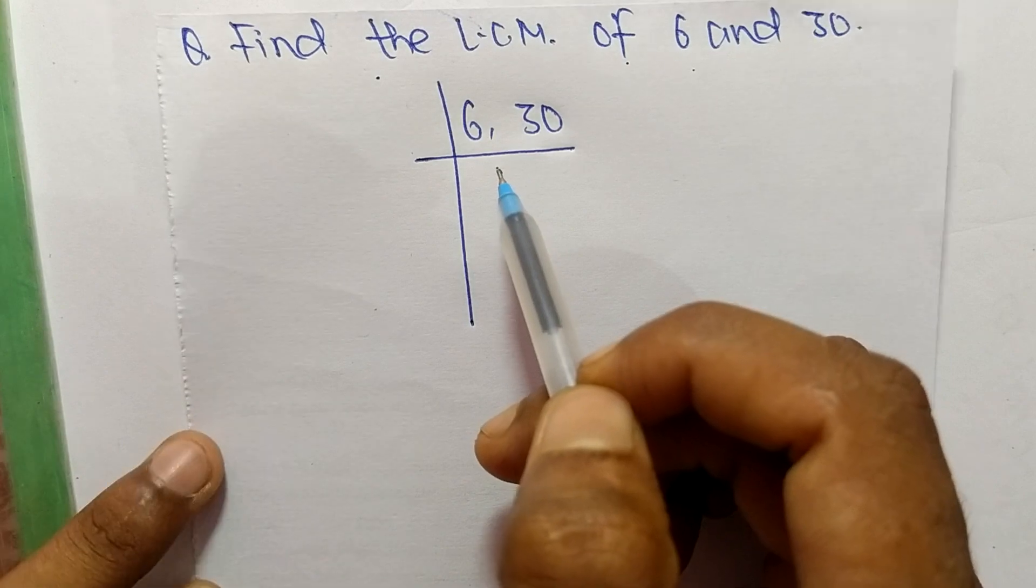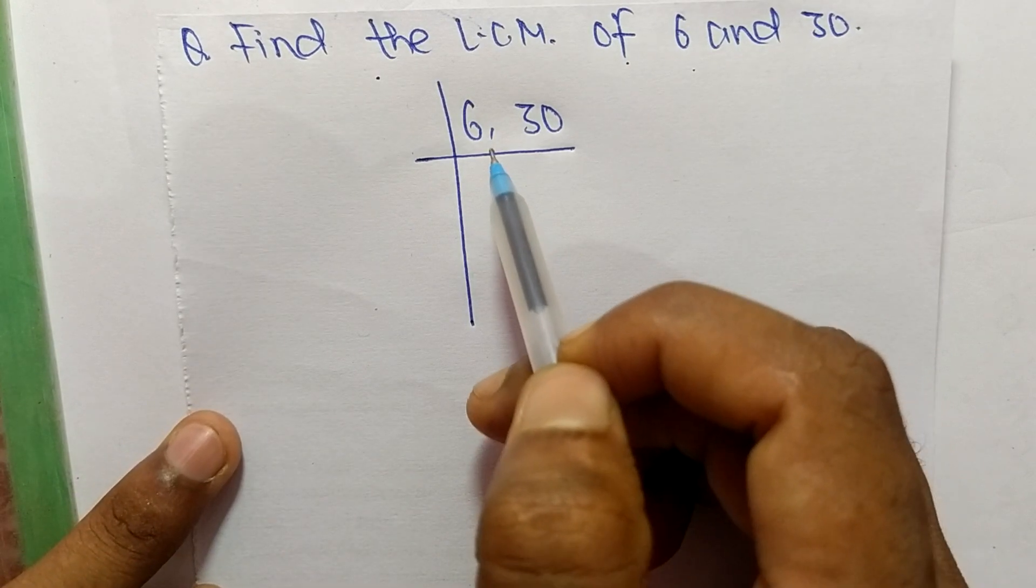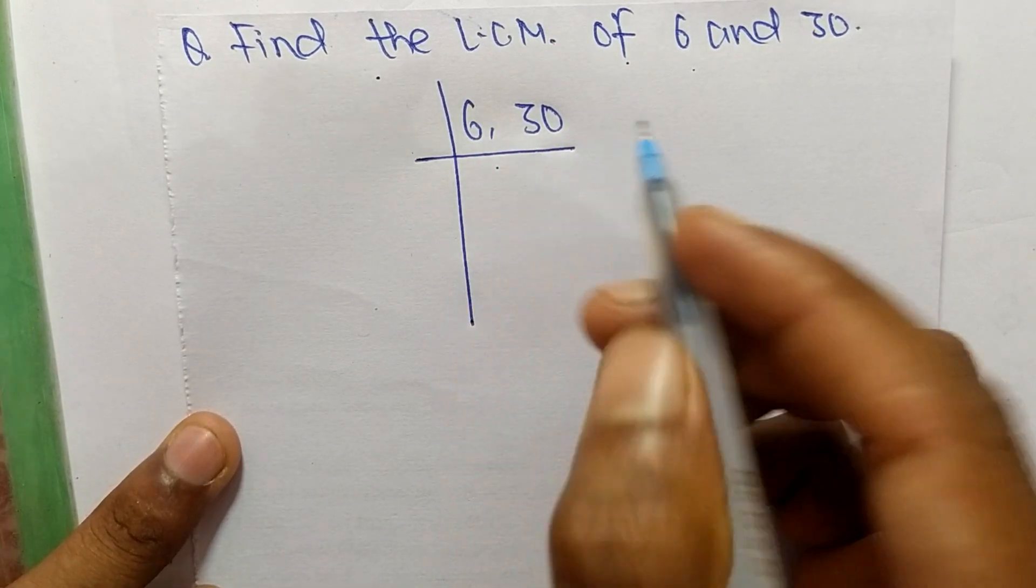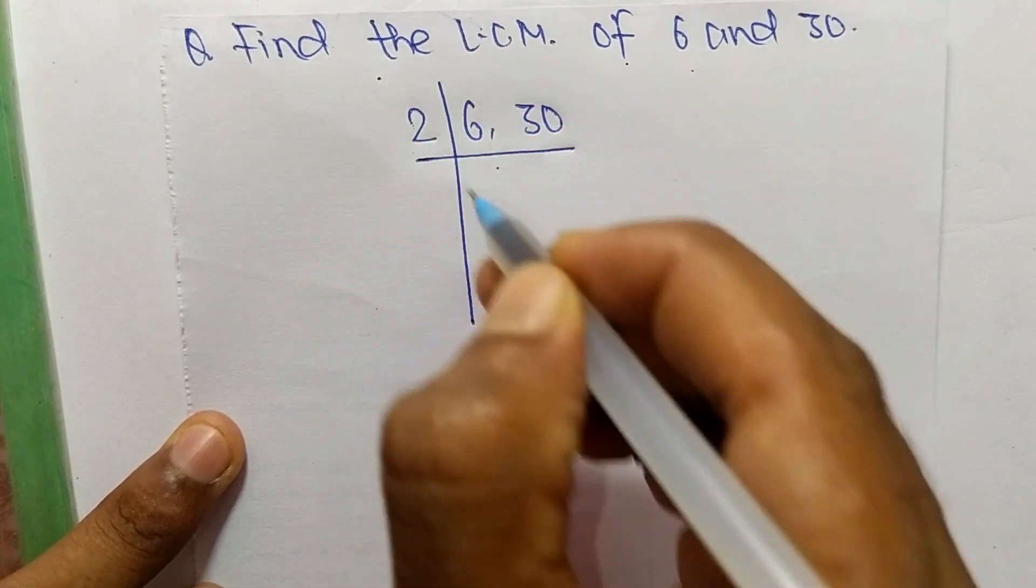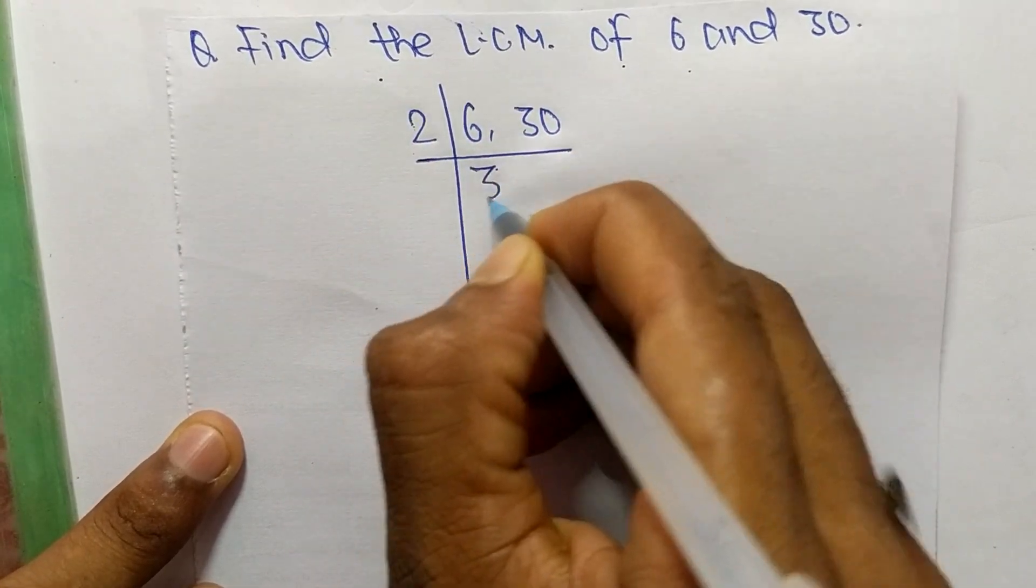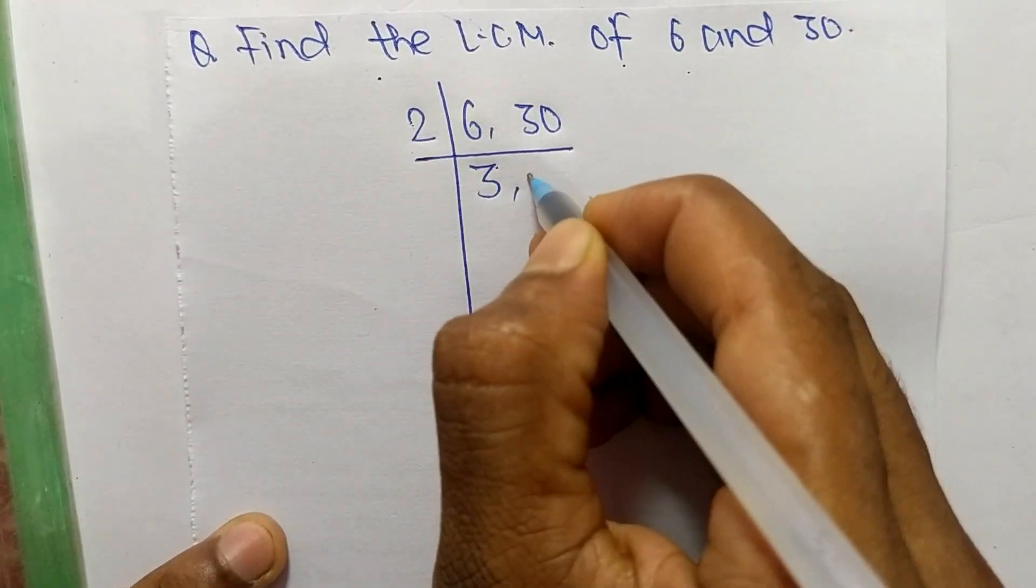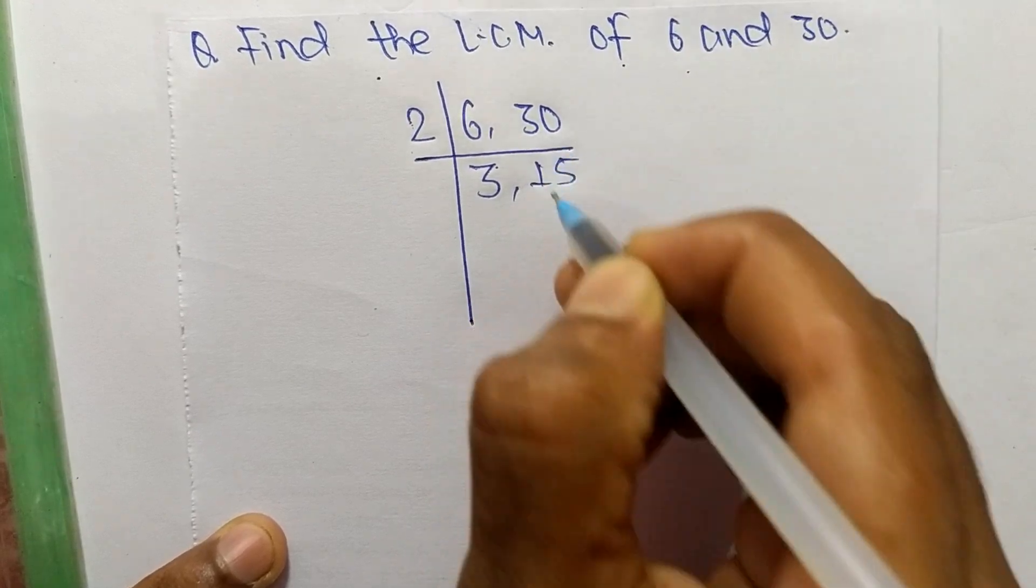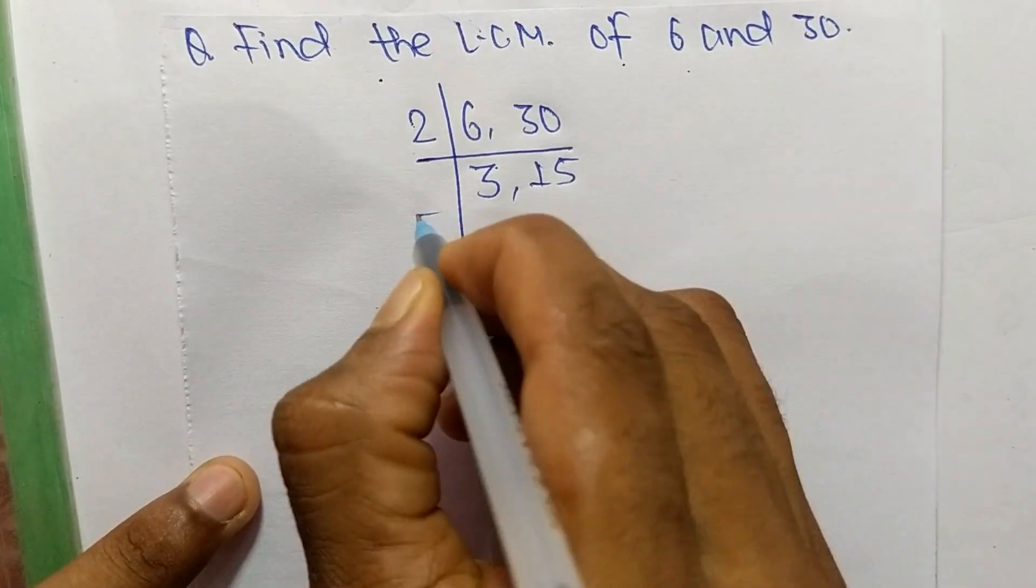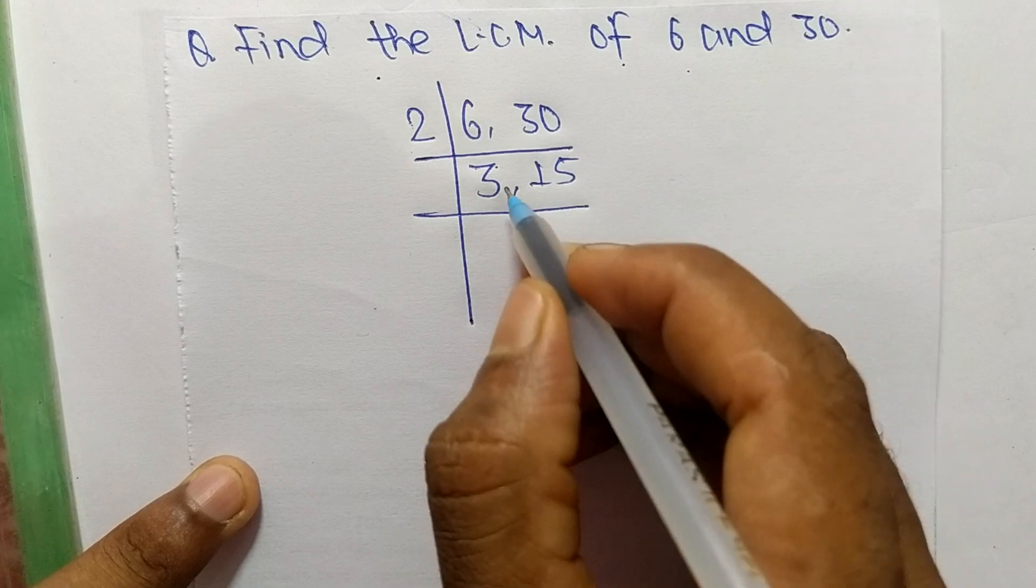First, we choose the lowest number which can exactly divide 6 and 30. The number is 2. So 2 times 3 equals 6, and 2 times 15 equals 30. Now 2 can't divide both numbers exactly.